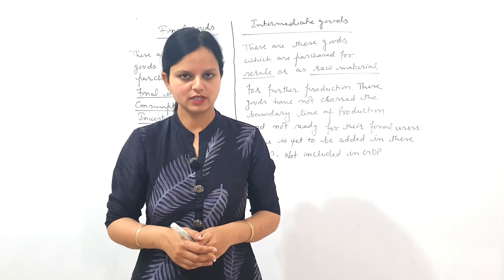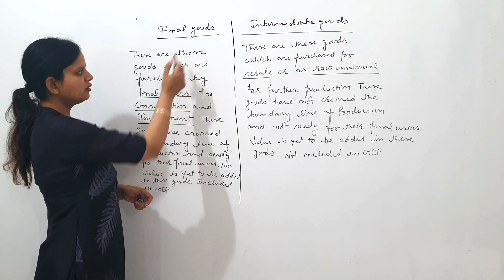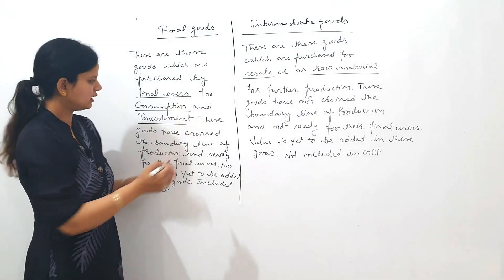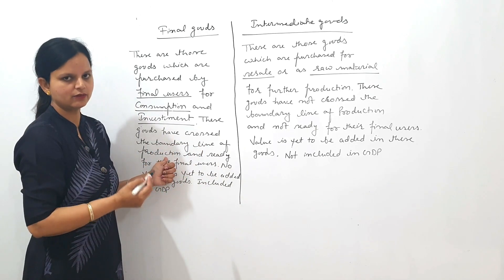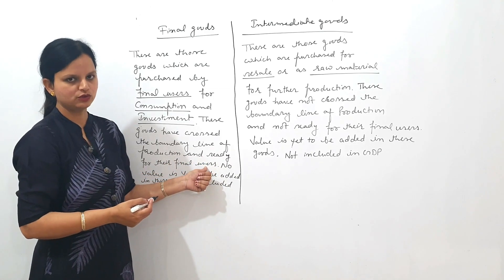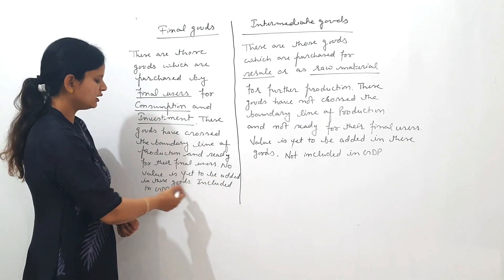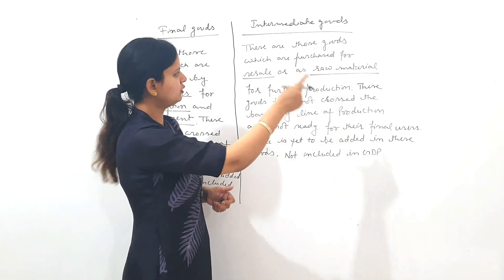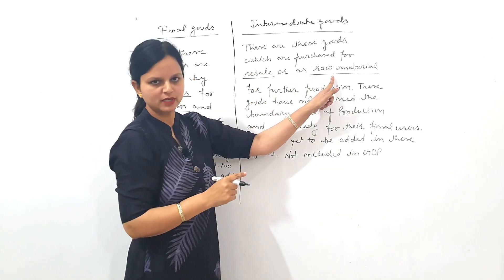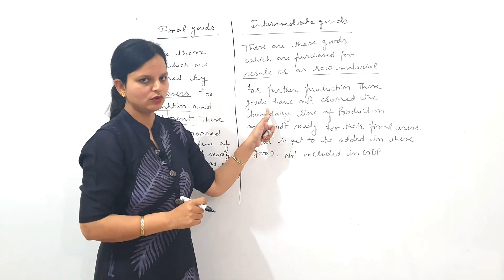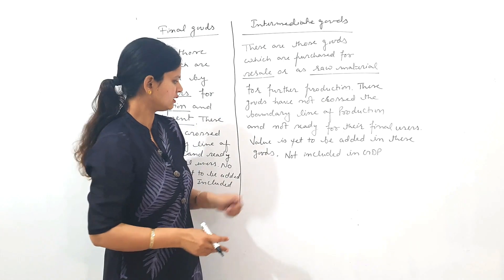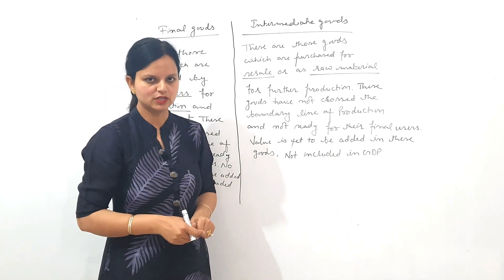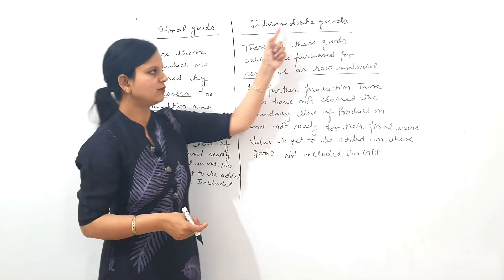Now I am summarizing the concept of final goods and intermediate goods. Final goods are those goods which are purchased by final users for consumption and investment. These goods have crossed the boundary line of production and are ready for their final users — producers and consumers. No value is yet to be added, that's why these are included in GDP. Intermediate goods are those purchased for resale or as raw material for further production. They have not crossed the boundary line of production — value addition still continues — so they are not included in GDP, as their value is already included in the value of final goods.